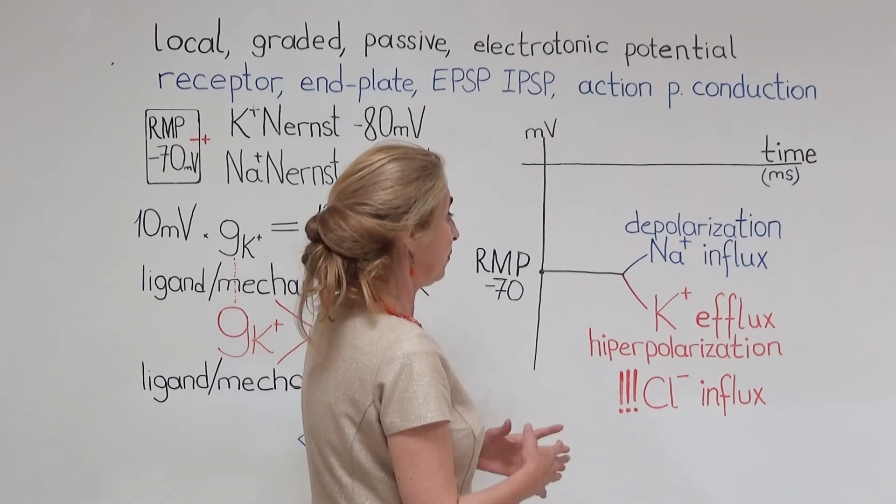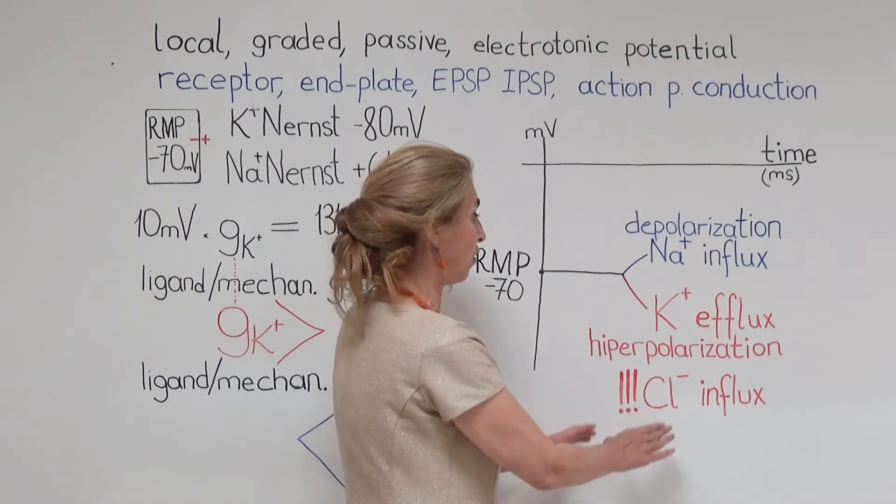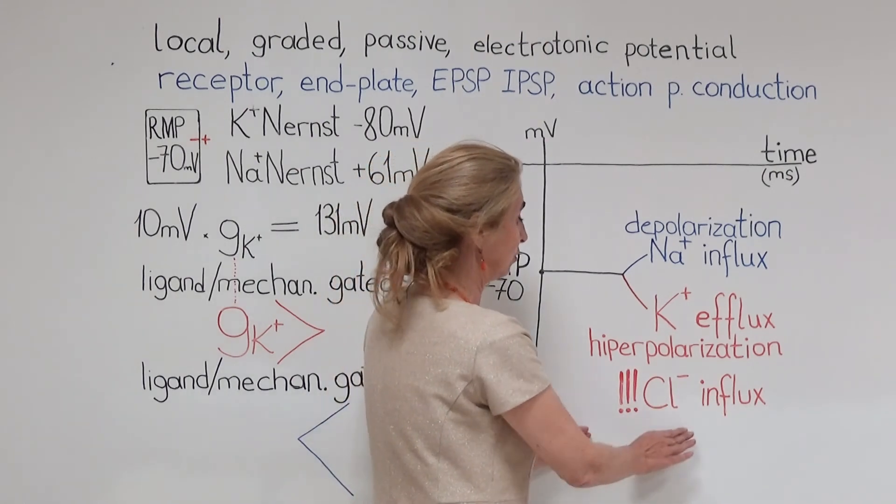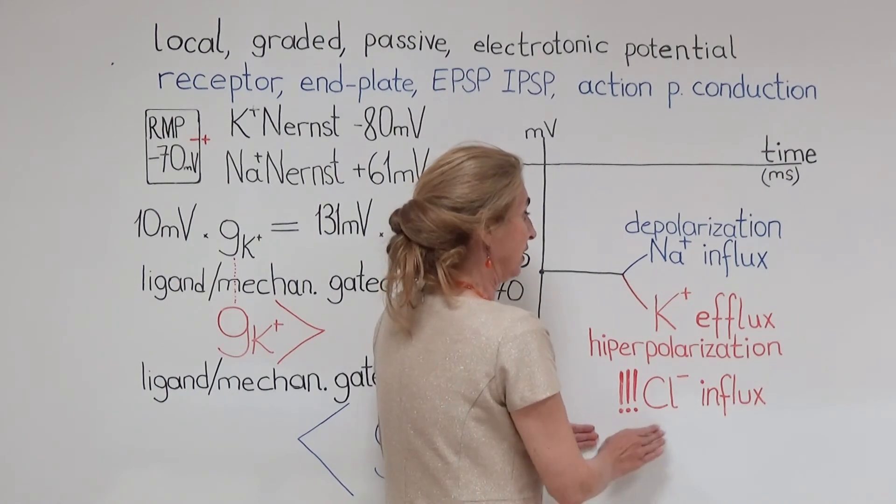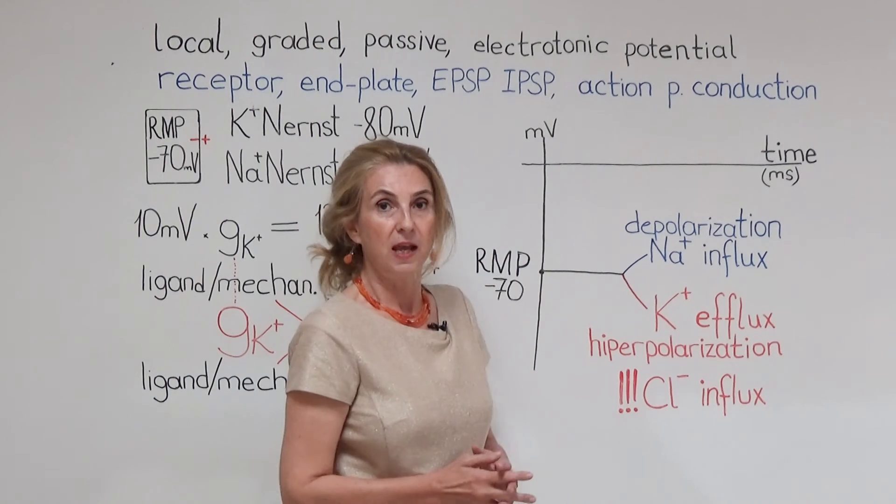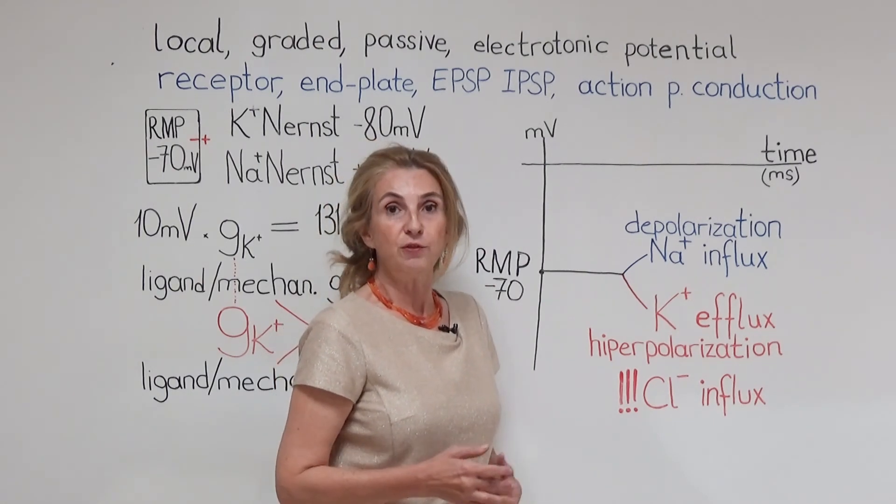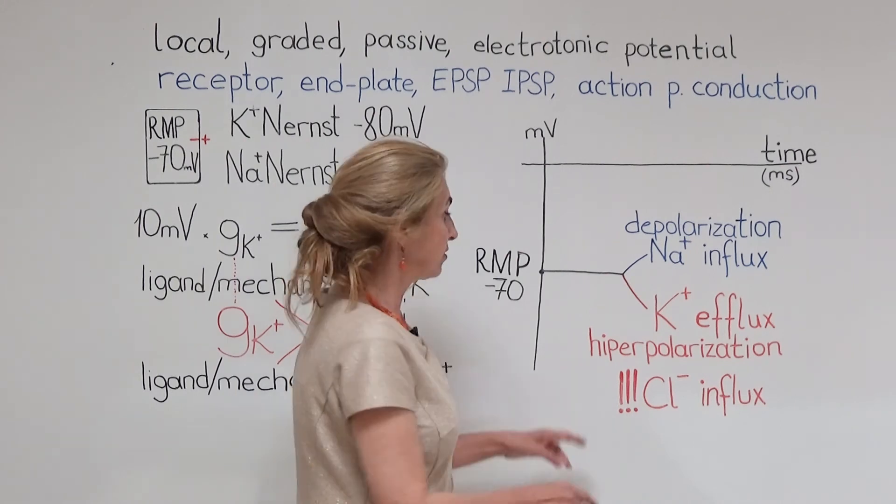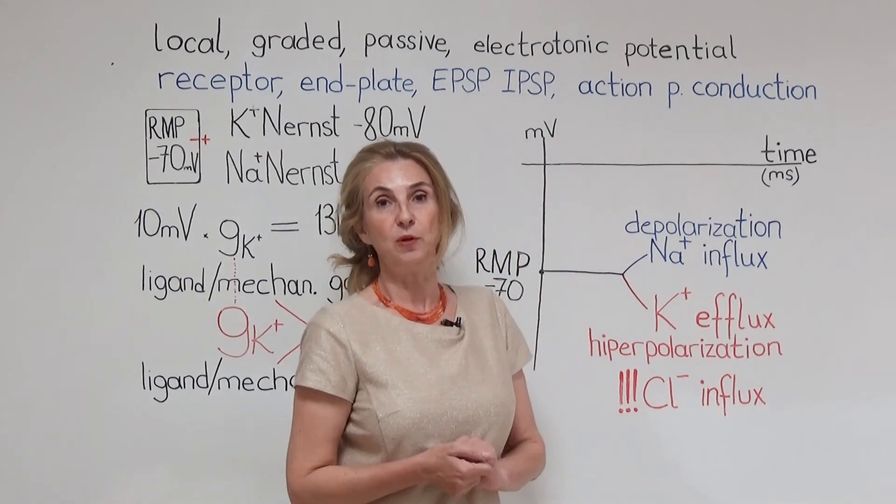If we talk about chloride, the last piece of local potentials belongs to chloride. A chloride influx makes a similar effect as a potassium efflux. Because chloride is negatively charged, entry of chloride to the cell is going to produce extra negativity and hyperpolarization.